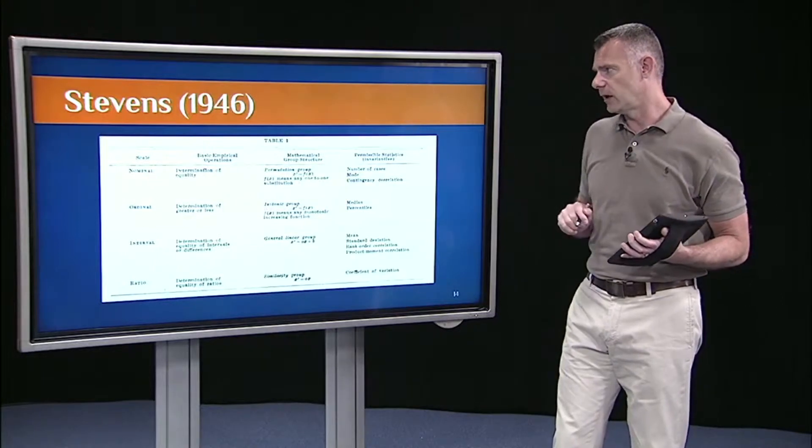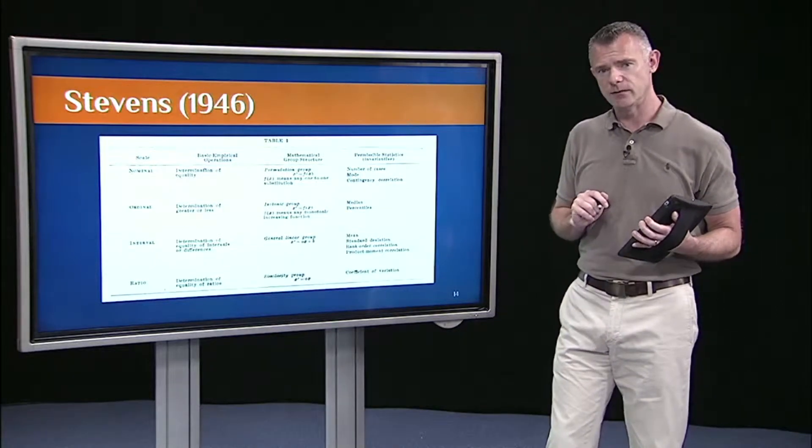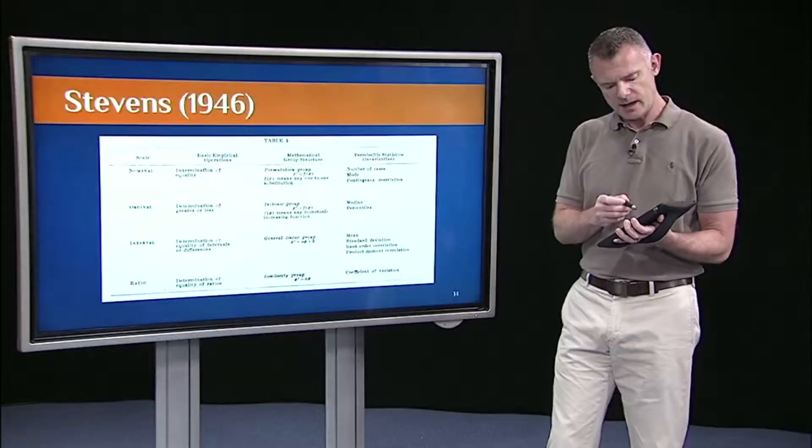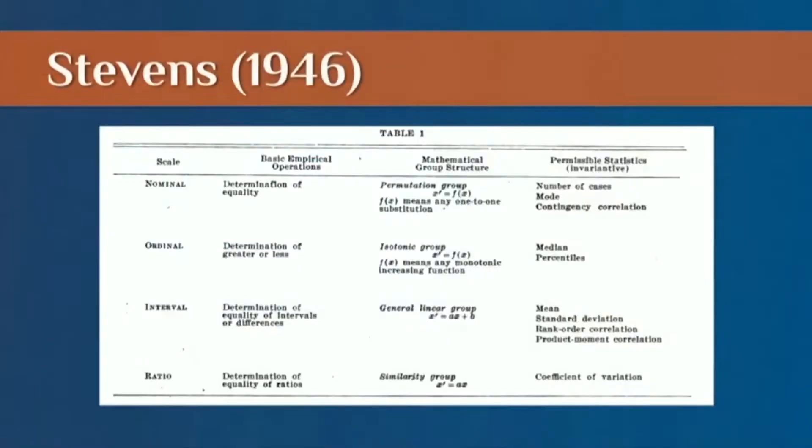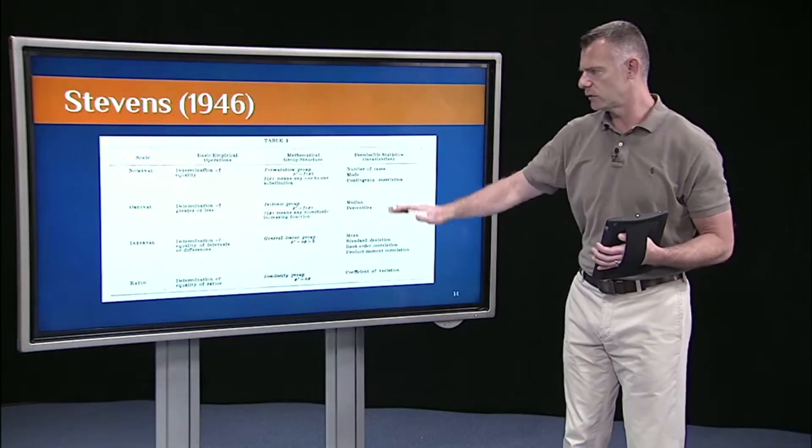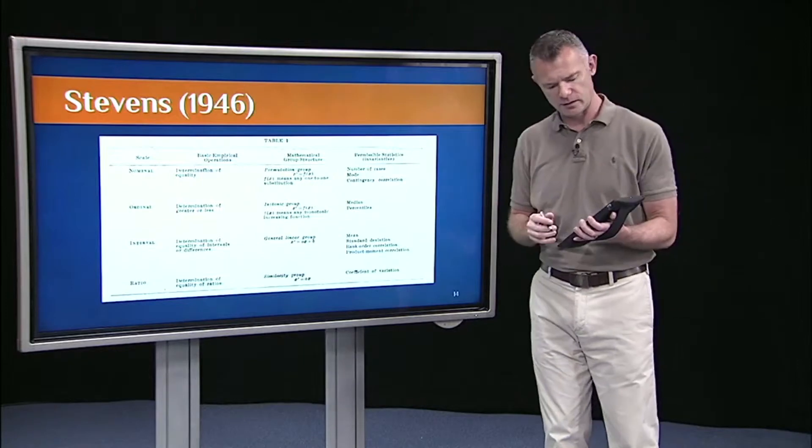In this classic paper by Stevens in 1946, he came up with these four distinct categories or types of variables because there are different types of things we can do with these kinds of variables. I know this font is a little fuzzy and hard to see. I purposely cut and paste this table from Stevens 1946 because I think it's an important paper everyone should read. I won't go through the whole slide. You can look at this at your leisure.